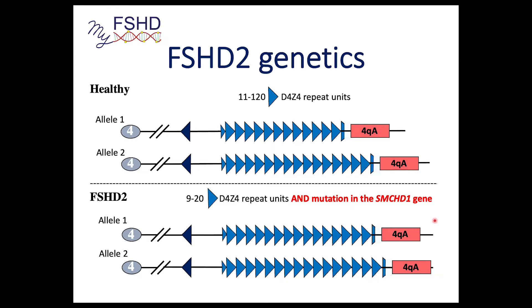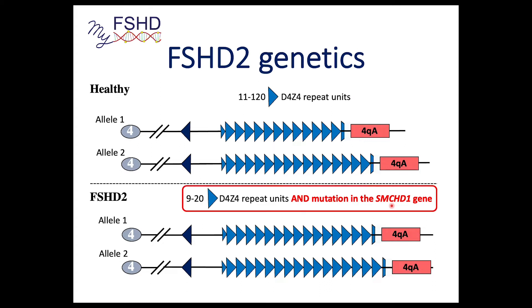FSHD2 does not have the contraction. In FSHD2, you can still have more than 10 D4Z4 repeat units — the range is about 9 to 20 repeat units. But it's very important to also have a mutation in a regulatory gene, most commonly the SMCHD1 gene, often referred to as the FSHD2 gene. This makes FSHD2 digenic — you need that second mutation.